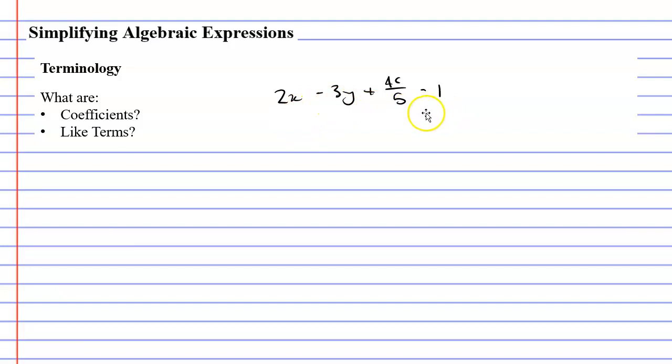So this particular algebraic expression which I've written down has 1, 2, 3, 4 terms. Now if I look at just one of these terms, let's look at the first one here, 2x. I can say that this pronumeral x has a coefficient of 2. So this word coefficient basically means what number is to the left of the pronumeral.